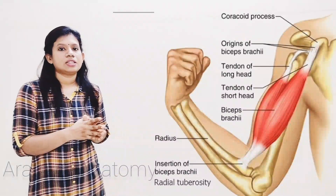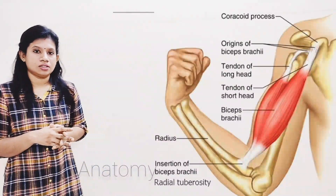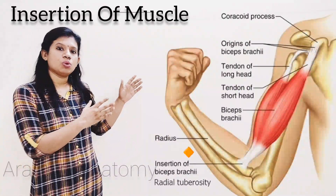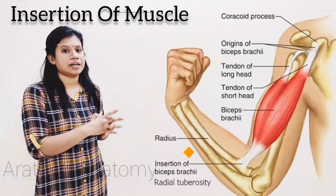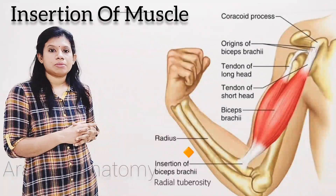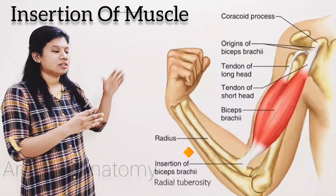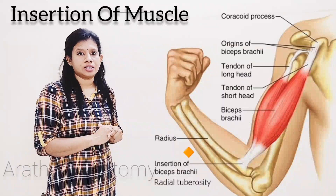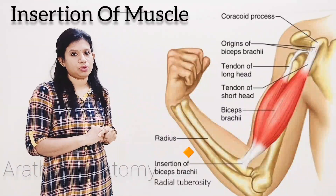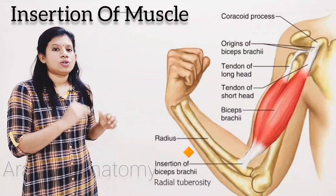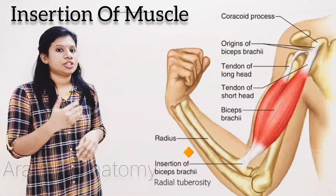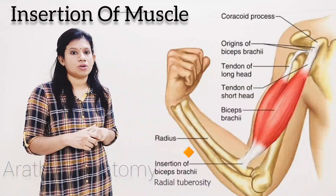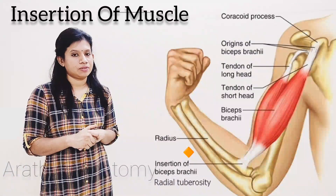The next one is called as insertion. Insertion means the end of the muscle which moves during contraction. When the muscle contracts, an end, if it is moving, that part is called as insertion. Origin and insertion are commonly used terms in the anatomy of muscles.